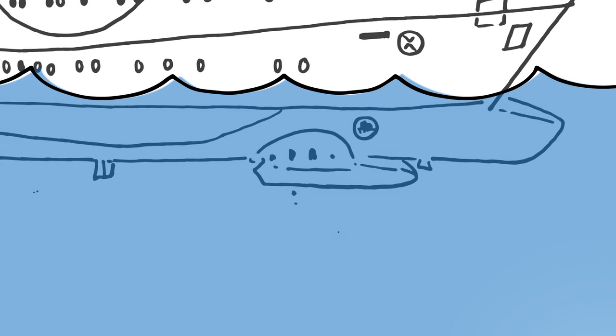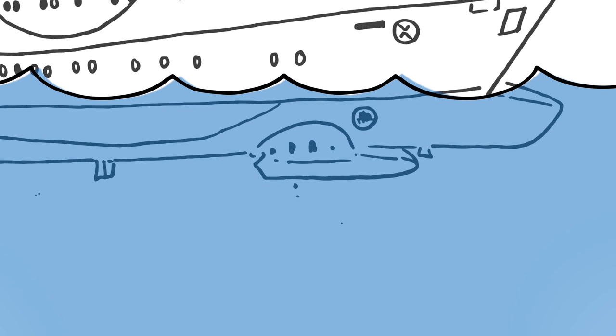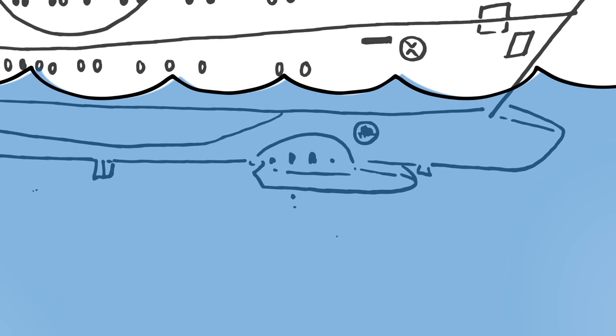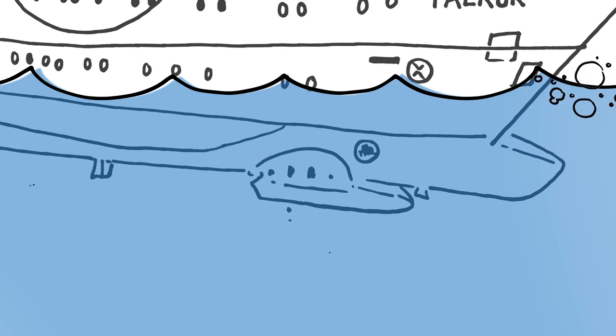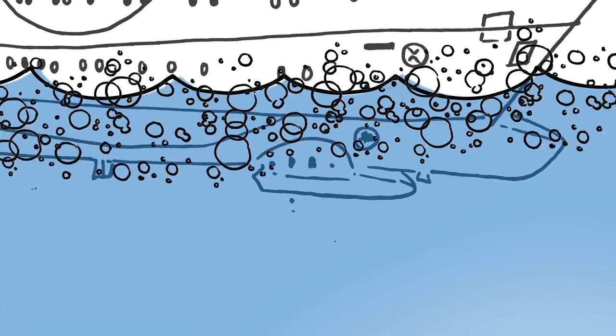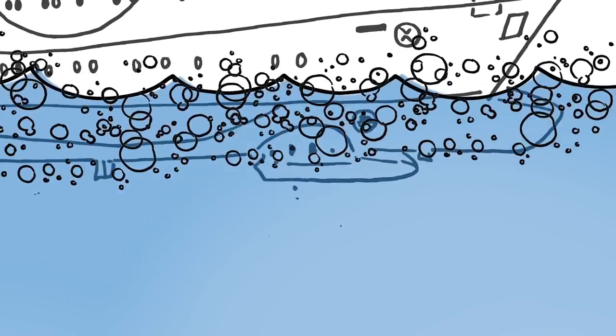Oh and check this out! This is the gondola. What's up? It holds the multi-beam's transmitter and receiver. It sits well below the keel of the ship so that the bubbles produced by the rocking and rolling of the ship don't affect the data.